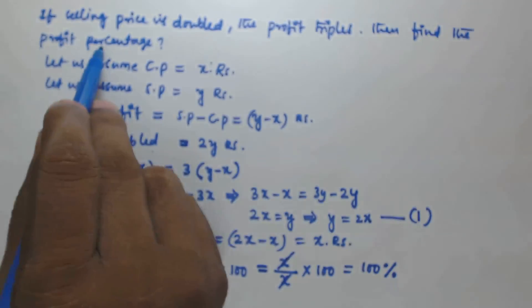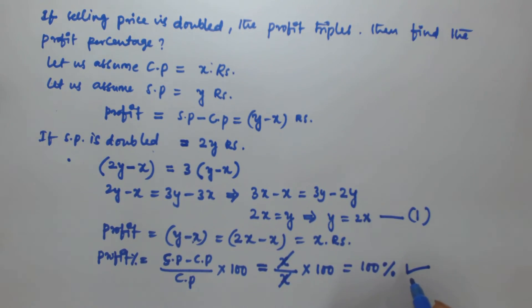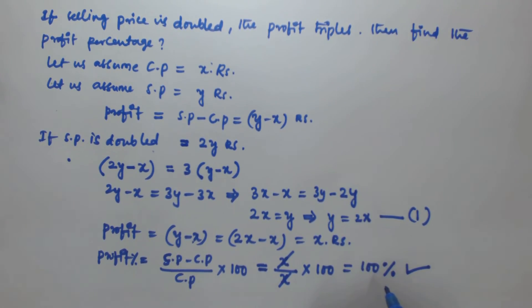So if the selling price is doubled and the profit triples, the profit percentage is 100%. Thank you very much for watching. If you have any doubt, please leave a comment and please subscribe to my channel.